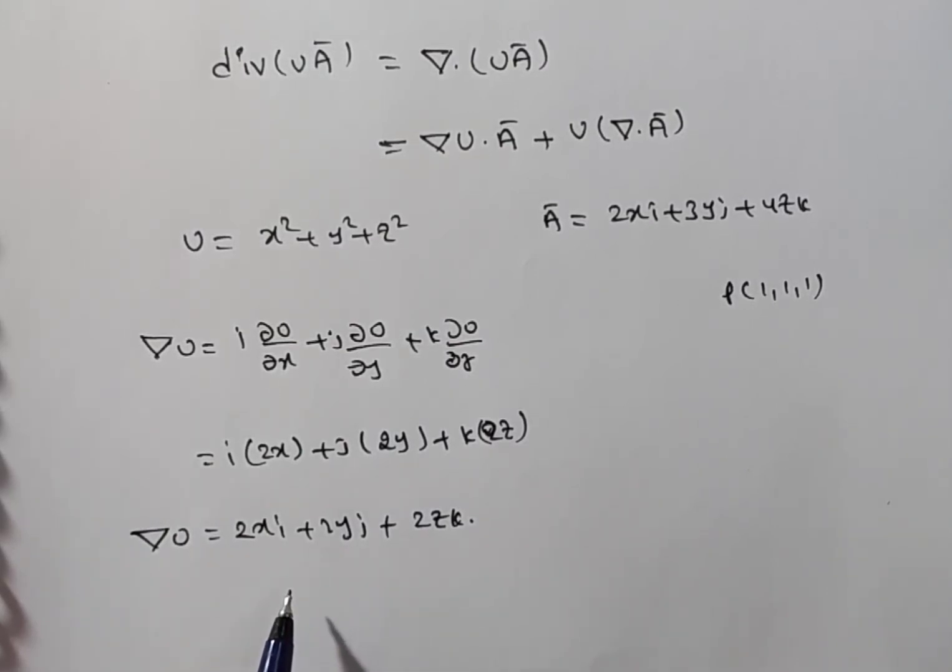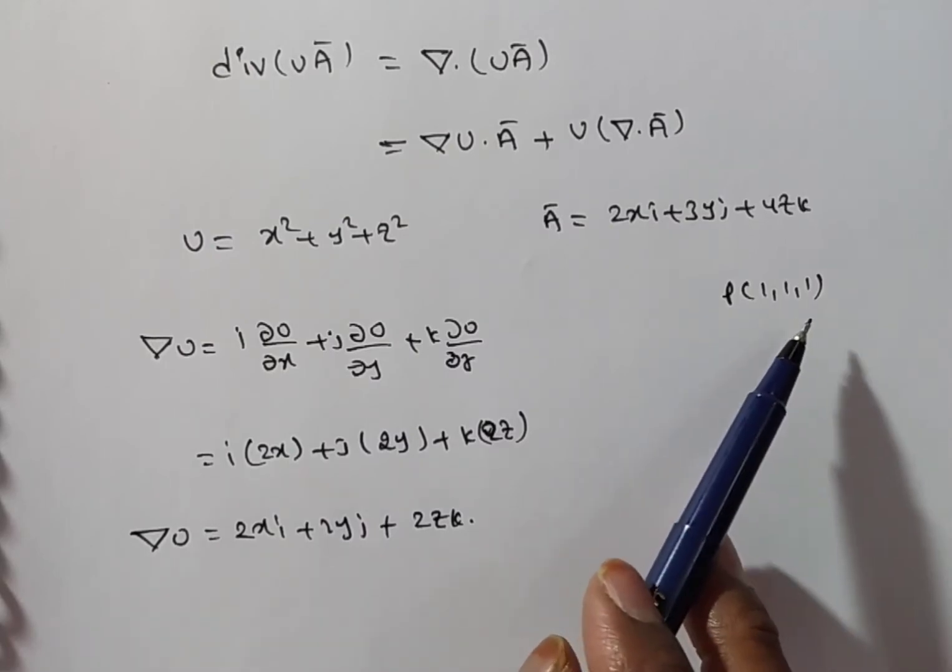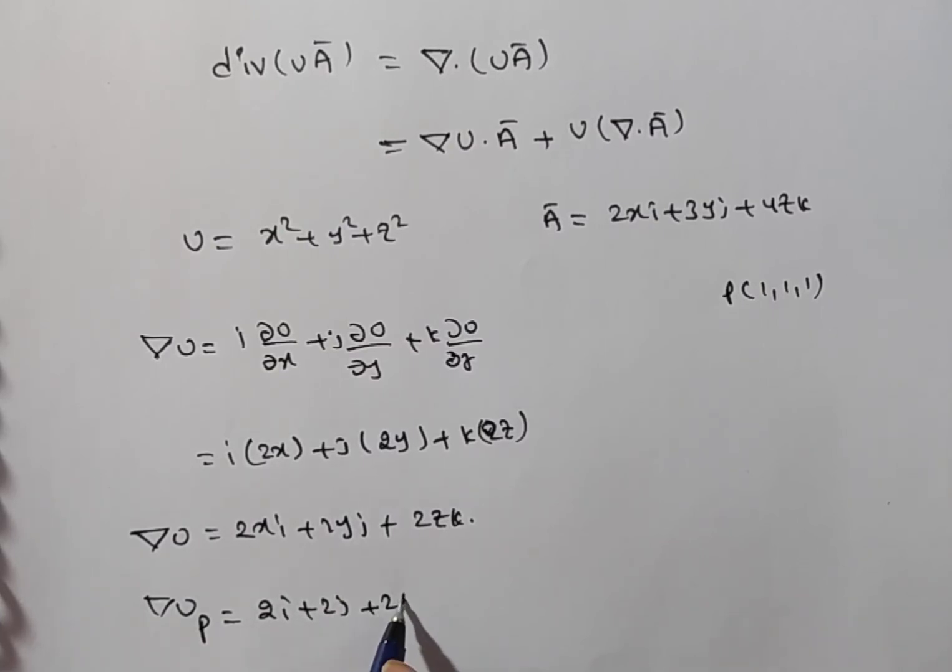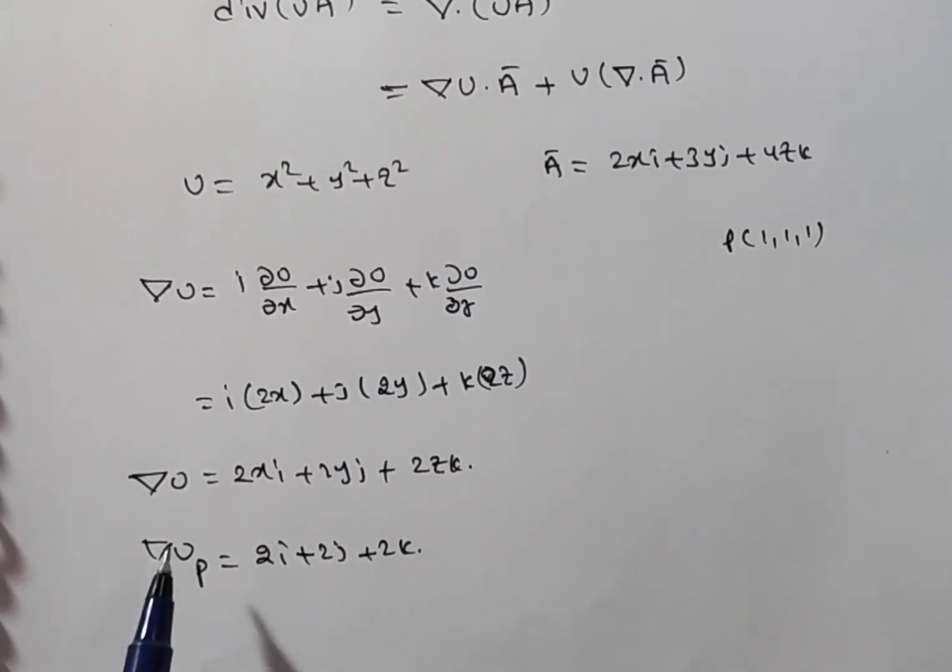Where you want this del u? Del u directly in place of x, you can substitute 1, 1, 1. You will get the value. Otherwise, del u dot a bar find out. Then, also you can do. Now, I am doing del u at the point p. That is 2i plus 2j plus 2k.